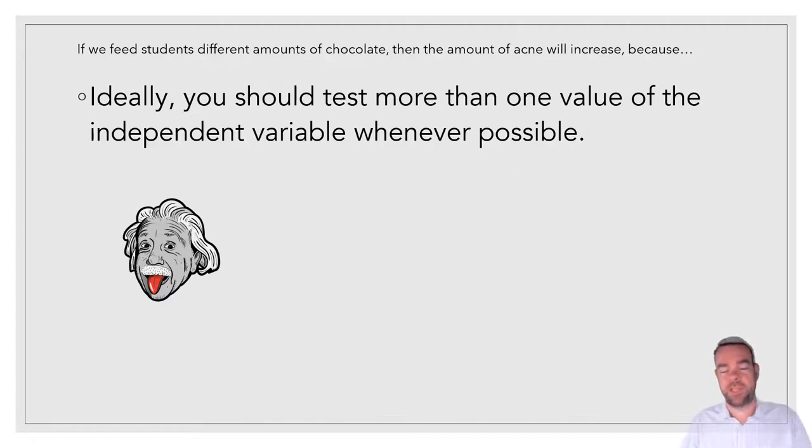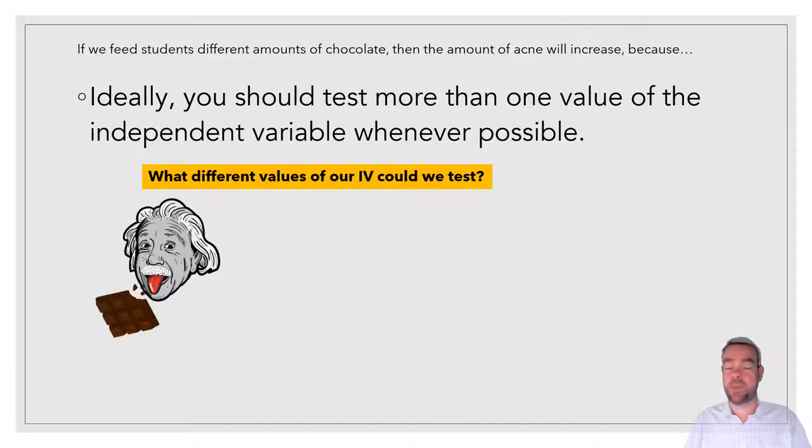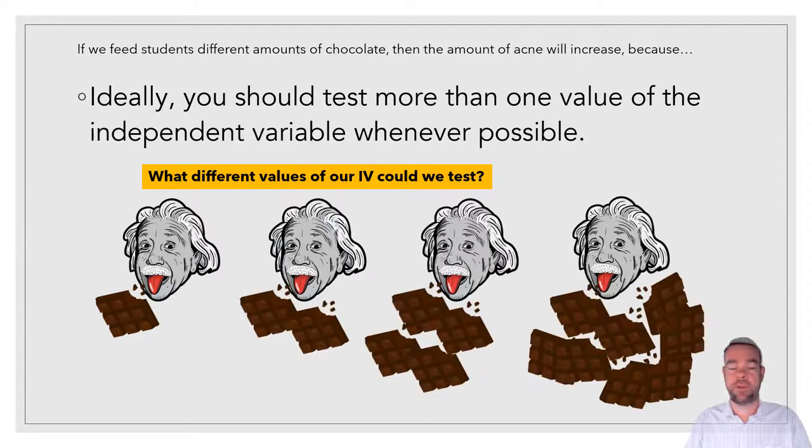So when you're designing an experiment, one really important thing to consider is going to be the amount of the independent variable. For example, testing out a vaccine like they're doing right now for COVID, they aren't just testing one amount of the virus or the RNA or whatever it is that they're injecting, right? They're actually testing multiple different values. So with our experiment, we could give a human chocolate. But it's even better if we give them different amounts of chocolate. So get a bunch of humans and split them up into different groups and give them different amounts.